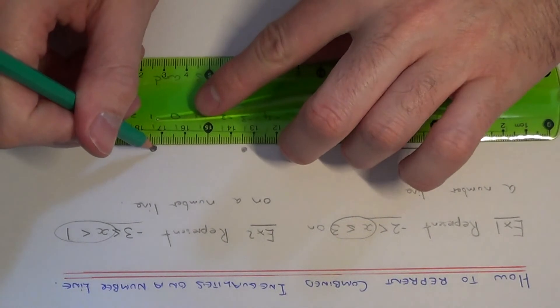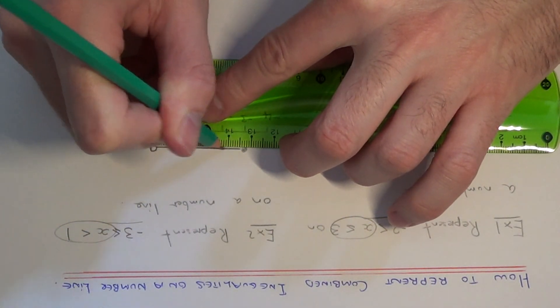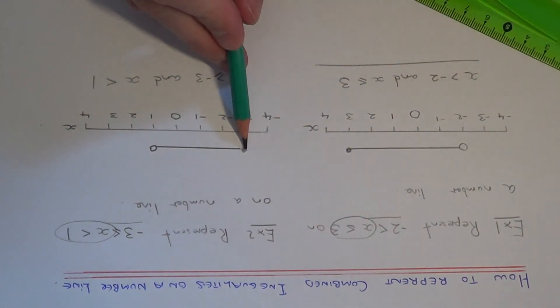And then we just need to connect the two circles as x can be any number which is more than or equal to minus 3 and less than 1.